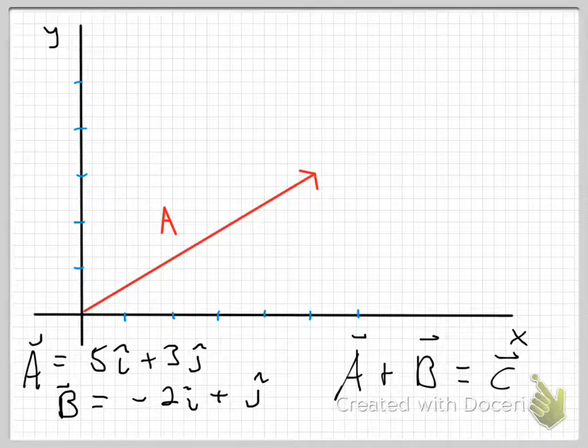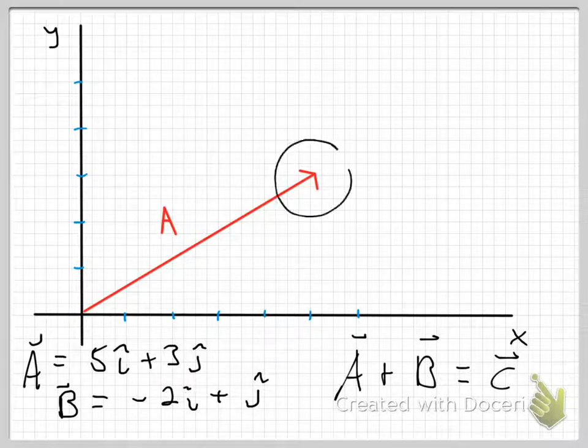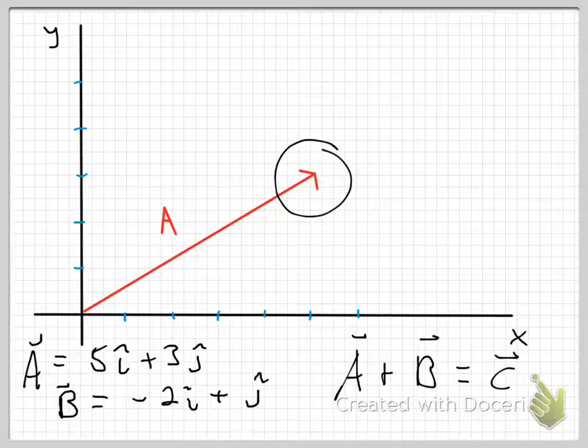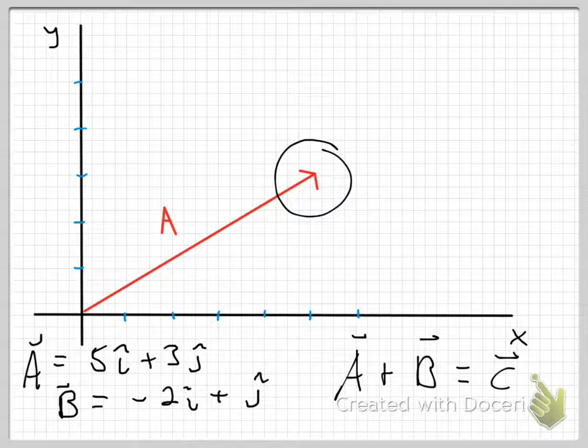So how do I do this graphically? Well, very simple. I take the vector B, and I position it such that the tail, that is to say the starting point of B, lies at the tip or the ending point of A. The ending point or the tip is where I have drawn the arrow part of it. So I'm going to take the tail of vector B, and I'm going to paste it onto the tip of vector A. Let me show you what that looks like.